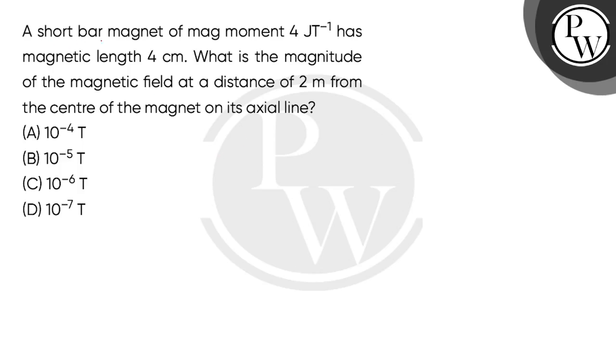Hello guys, let's read the question. A short bar magnet of magnetic moment 4 joule per tesla has magnetic length 4 cm. What is the magnitude of the magnetic field at a distance of 2 meters from the center of the magnet on its axial line?